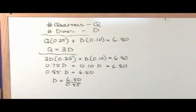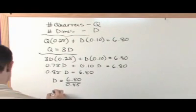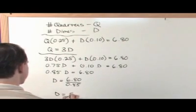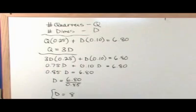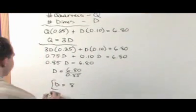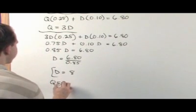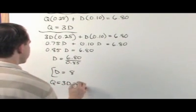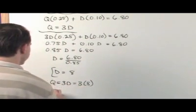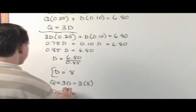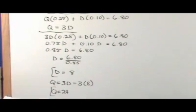Because you just divide both sides by what's in front of D there. So D is going to be equal to 8 when you put this in your calculator. The number of dimes you have is 8. And to find the number of quarters, you just use the other equation. Number of quarters is 3 times the number of dimes, which is 3 times 8. So the number of quarters you have is 24.